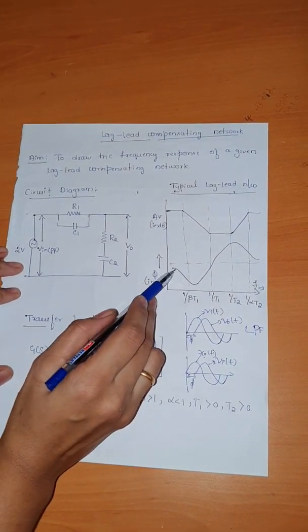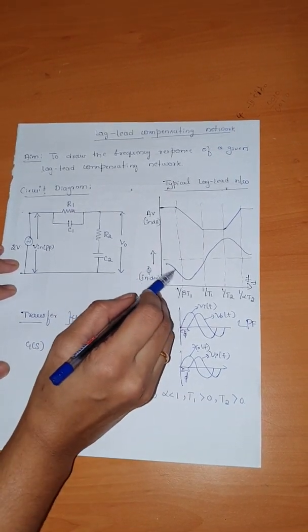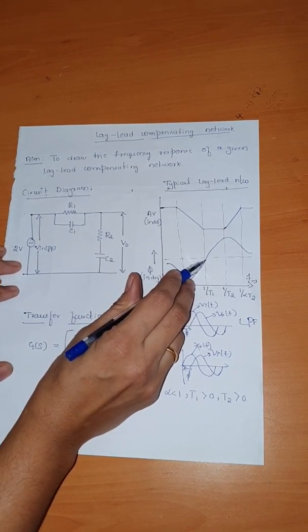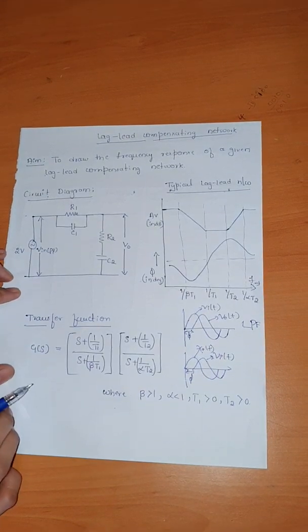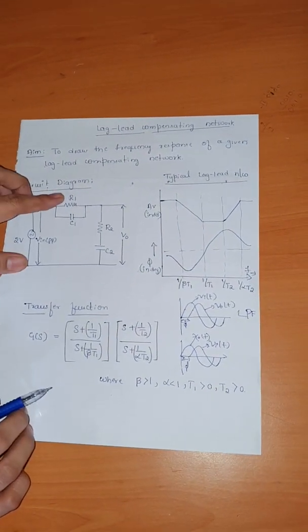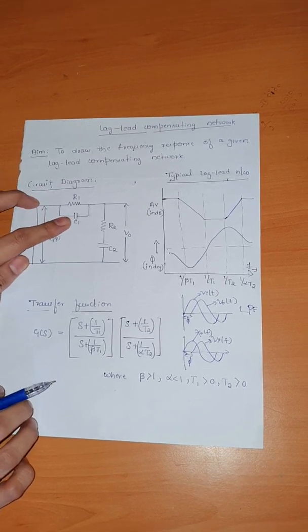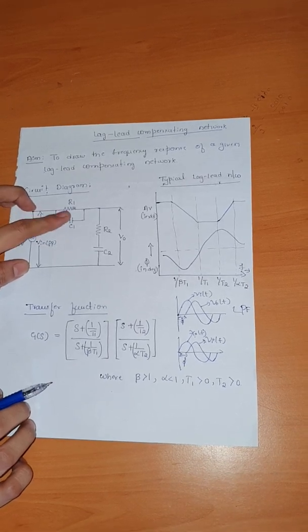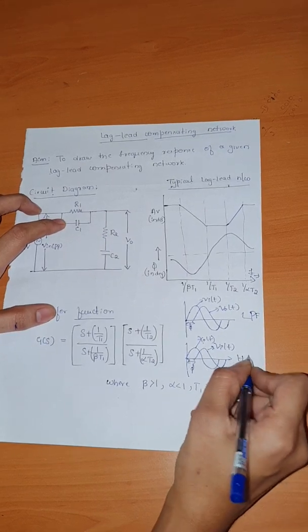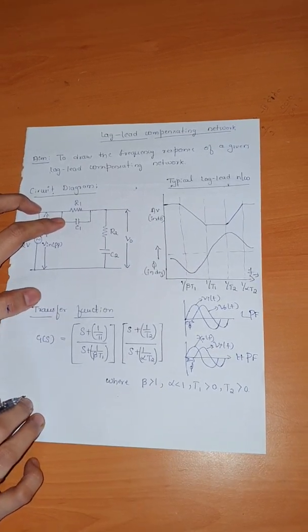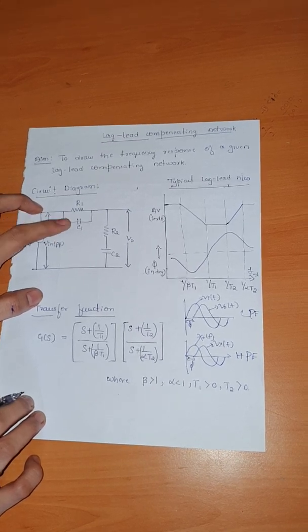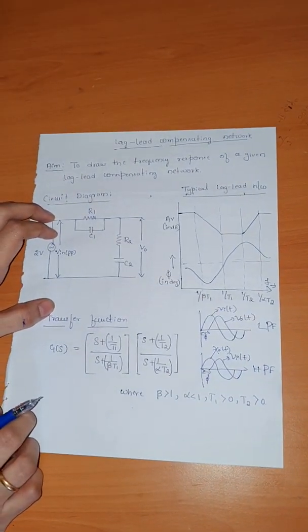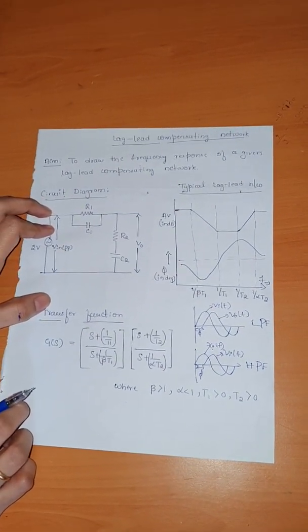This is the waveform for the lag compensating network — the system acts as a low pass filter, allowing only lower frequencies while higher frequencies are eliminated. Coming to the lead part of the lag-lead compensating network, resistance R1 is connected in parallel with capacitor C1, which acts as a lead compensating network. The lead compensating network can also be called a high pass filter, which allows only higher frequency signals and eliminates lower frequency signals.